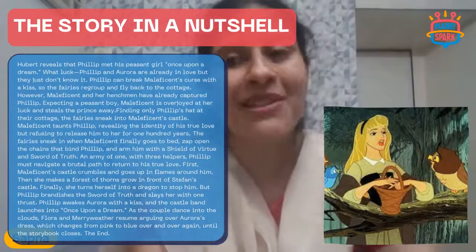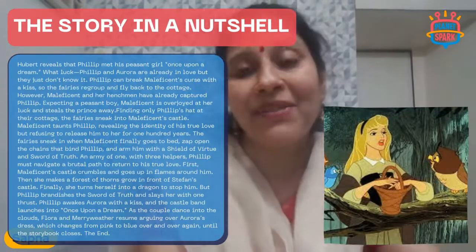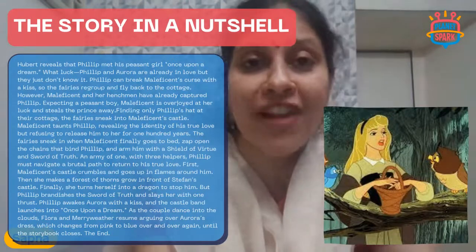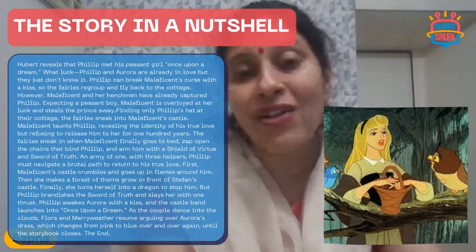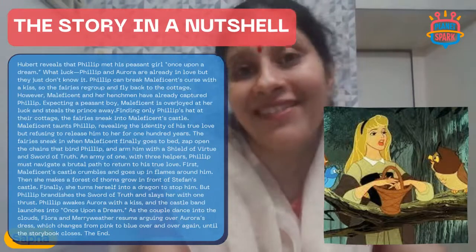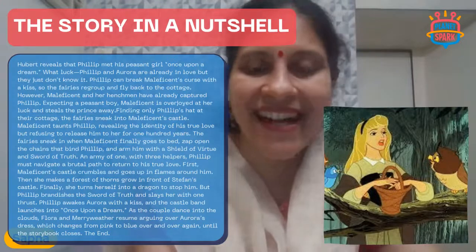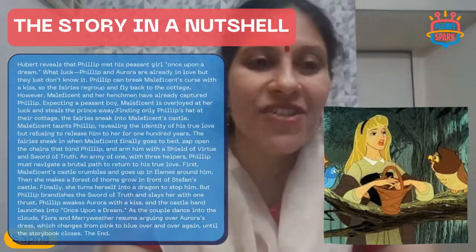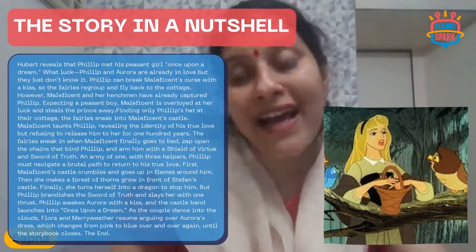Philip awakens Aurora with a kiss, and the castle band launches into the beautiful song 'Once Upon a Dream' as the couple dances into the clouds. Flora and Meriwether resume arguing over Aurora's dress, which changes from pink to blue over and over again until the storybook closes. Prince Philip and Princess Aurora live happily ever after. That was a lovely story — giving us the message that love can vanquish and conquer all other emotions and evils.